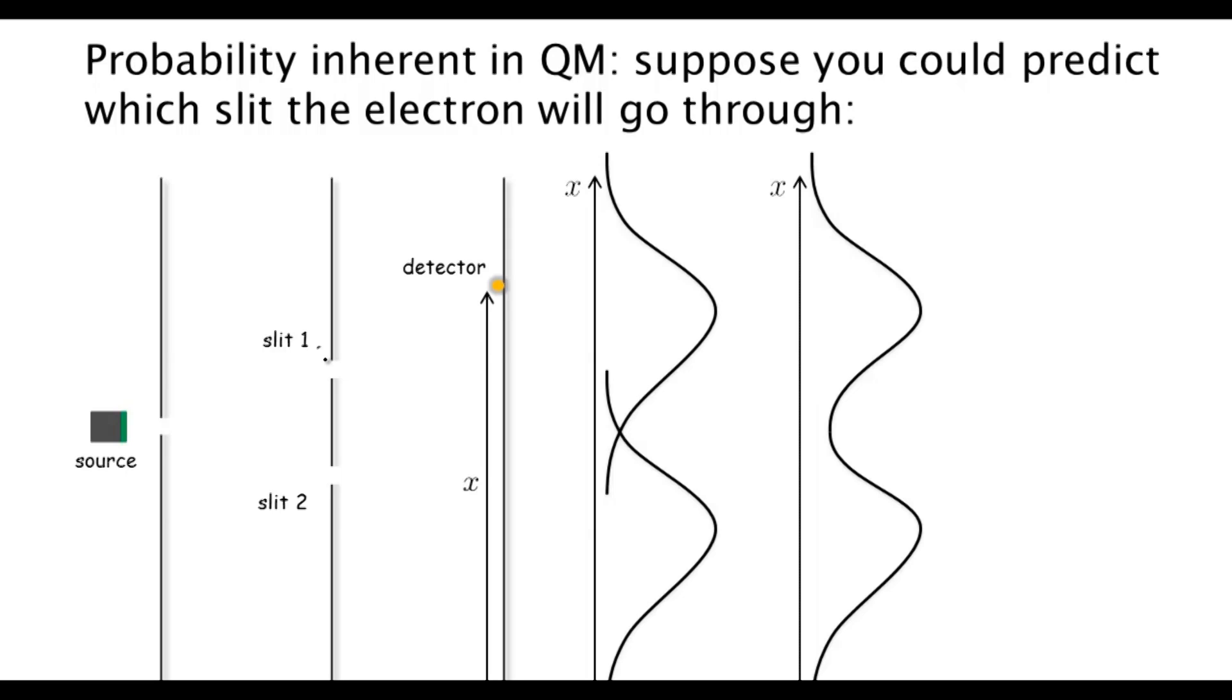Maybe the fact that we are saying it went through either slit 1 or slit 2 is just a consequence of our lack of knowledge about the initial conditions. Maybe if we knew enough about the initial conditions of the electron, we could predict which slit it went through.